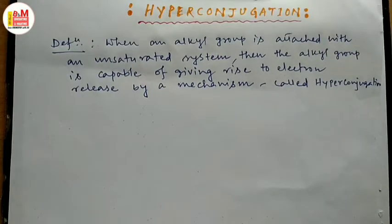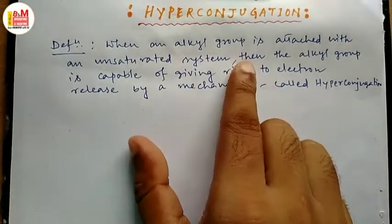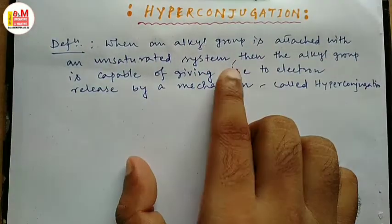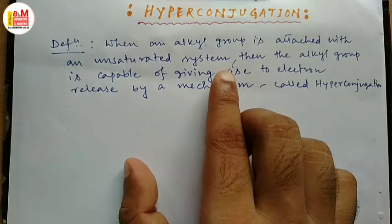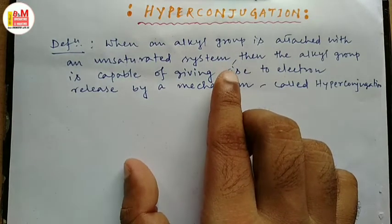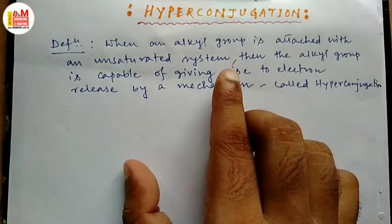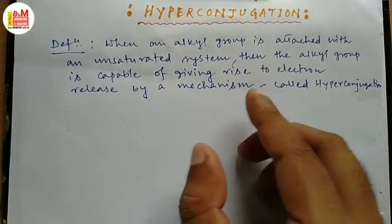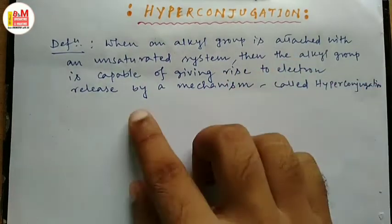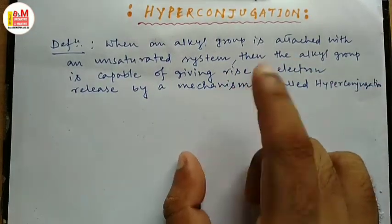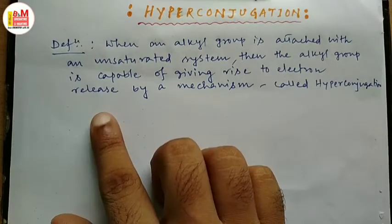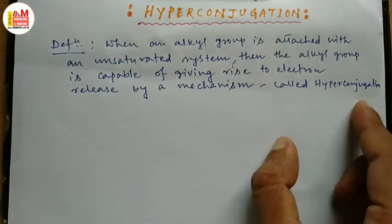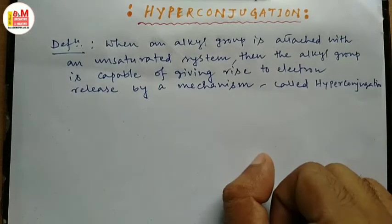So what is the definition? When an alkyl group is attached with an unsaturated system — which can be an alkene, an alkyne, a carbocation, a phenyl ring, etc. —